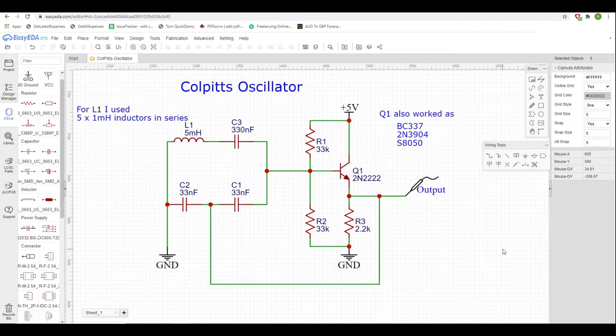A Colpitts oscillator consists of an LC network, which you can see over here, and on the right hand side an amplifier - in this case a transistor amplifier. I tried it with a few different transistor values. If you don't have a 2N222 and want to try yourself, all of these ones worked.